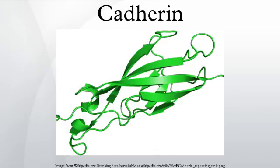Different members of the cadherin family are found in different locations. CDH1 (E-cadherin): E-cadherins are found in epithelial tissue. CDH2 (N-cadherin): N-cadherins are found in neurons. CDH12 (Cadherin 12 Type 2) and CDH3 (P-cadherin): P-cadherins are found in the placenta.